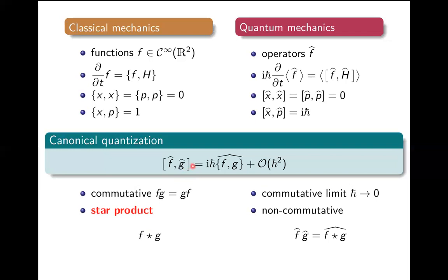If you had an actual quantization — a Hilbert space and a map assigning to every function on state space an operator — then you could define the star product by going backwards: take two observables f and g, take their operators f-hat and g-hat, multiply them as operators, and if you have a perfect correspondence that product corresponds to some function on phase space, which we denote f ★ g.